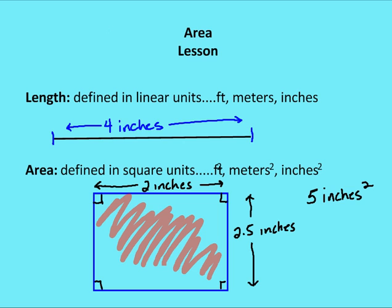So let's talk about area. First, we need to define what length is. Length is defined in some linear unit — feet, meters, inches — they're all linear units. It's going to be the distance between two points. So length is defined as a linear unit.